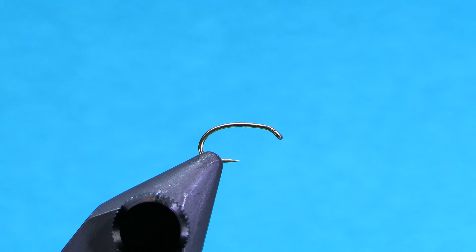I've got a size 16, 2457 or kind of heavier wire scud hook in the vise. I just watched a video recently with the originator of this fly and he actually tied it on a short straight shank hook like a 3769. Either one will work. Tie this in sizes 16 down to 24.